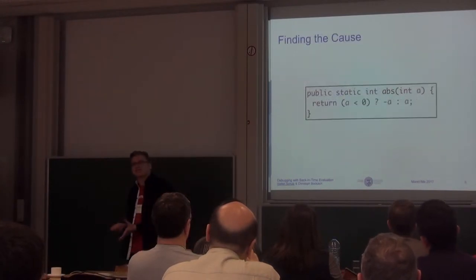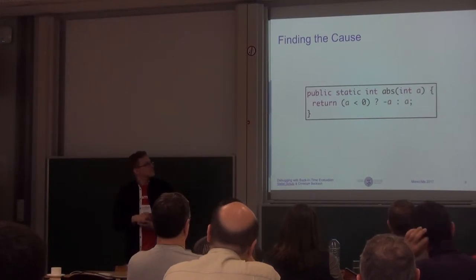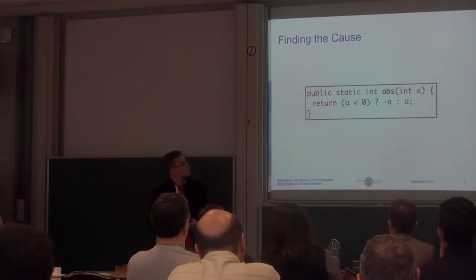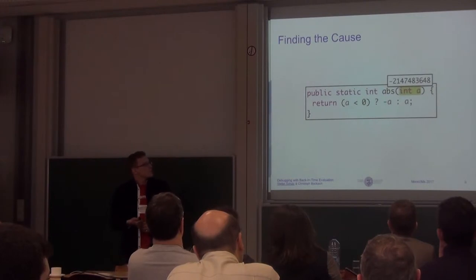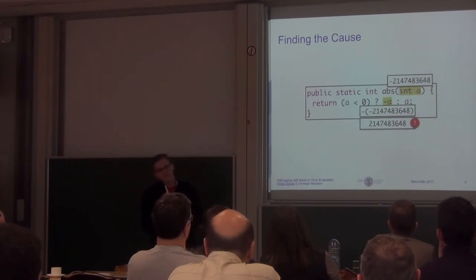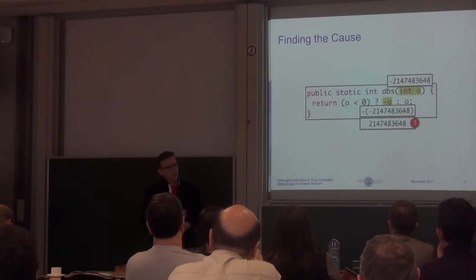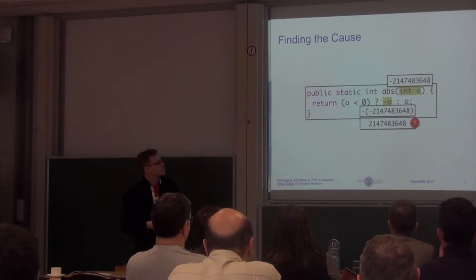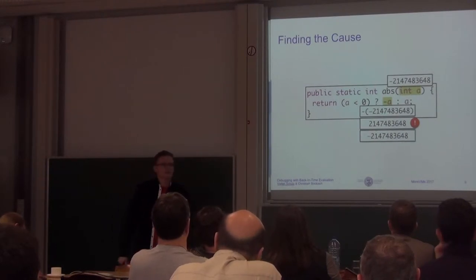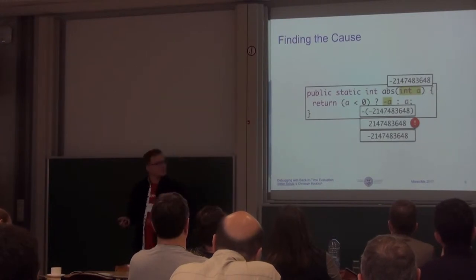We got a clue, so let's look at the implementation of abs. If you pass a negative argument, it is simply multiplied by minus one. Now that we know which values cause the problem, we can manually feed them into this method. Our argument is negative, we take the first branch and multiply it by minus one. But this is not an integer anymore, because the integer range is asymmetric: the minimum is minus two to the 31, but the maximum is two to the 31 minus one. So we are one off, and this causes an overflow.